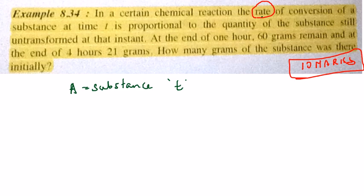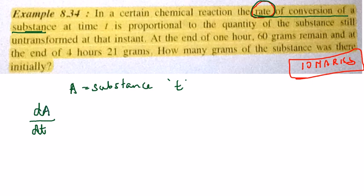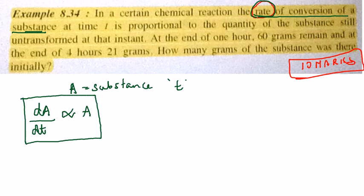The rate of conversion of that substance — whenever we see the word 'rate,' we say it is with respect to time. What are we differentiating with respect to time? The rate of conversion of the substance, so we write dA/dt, because A is the substance getting transformed in the chemical reaction. At any time, dA/dt is proportional to the amount of substance still not transformed.